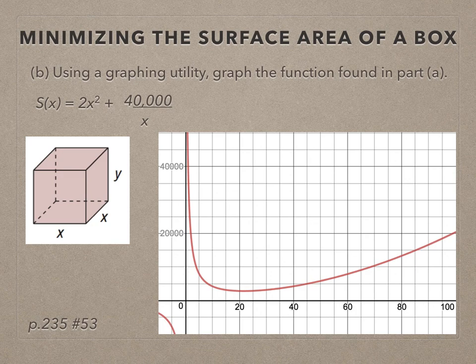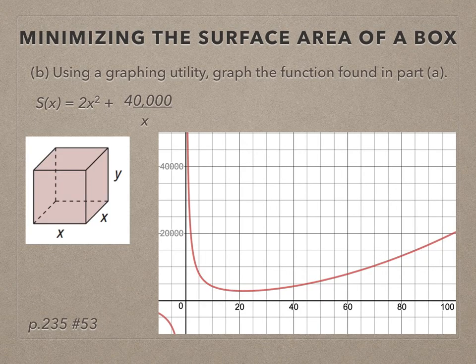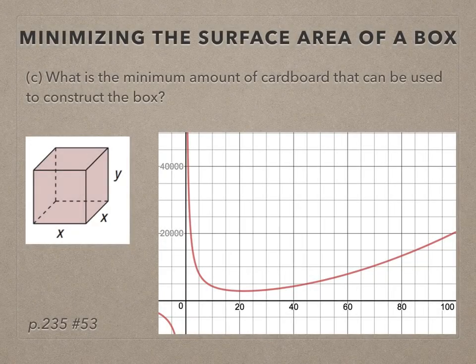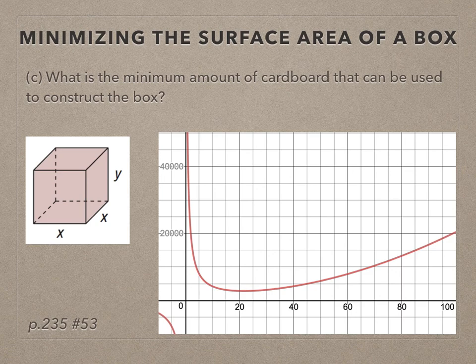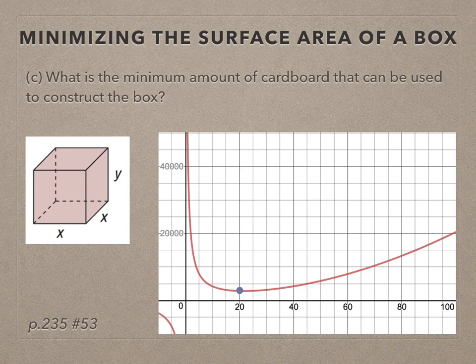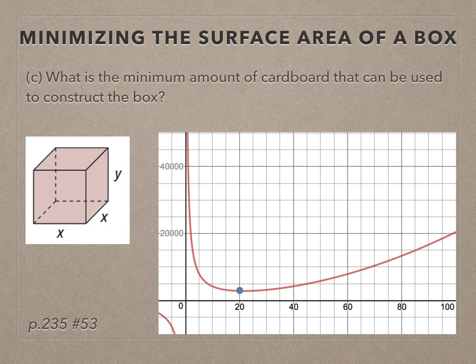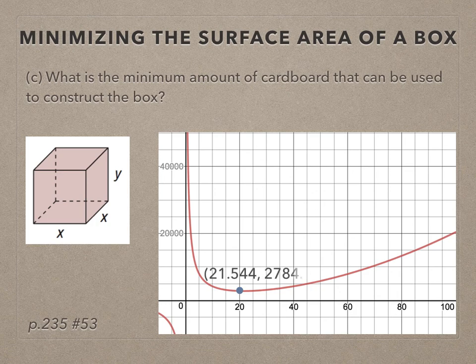Now part c and d we need to interpret the graph. Part c, what is the minimum amount of cardboard that can be used to construct the box? One of the nice features about graphing calculators is whenever there's an interesting point in the graph, such as an intercept or, in this case, a minimum value, you can just hover and grab the coordinates of that point.